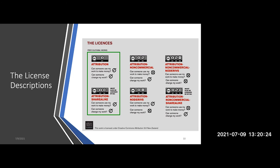The second in the center column has CC BY and then a circle with an equal sign — letters ND. That is Creative Commons Attribution No Derivatives. Can someone use my work to make money? Yes. Can someone change my work? No. They can use it in its entirety as is.